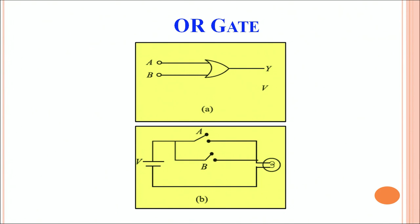The OR gate again has two inputs and one output. Figure A represents the symbol of the OR gate. We can see how this symbol differentiates from the symbol of the AND gate. Here A and B are the two inputs and Y is the output.